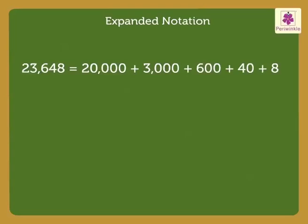Next is a tricky one, 80,005. We write it in expanded notation as 80,000 plus 5. Here there are 0 thousands, 0 hundreds and 0 tens in 80,005, so we do not include them in the expanded notation.